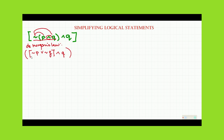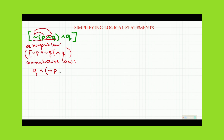After that, we are going to change the position of Q and this compound statement using the commutative law. This will make it easier to simplify the statement further. Using the commutative law, we get a new statement: Q and (negation of P or negation of Q).